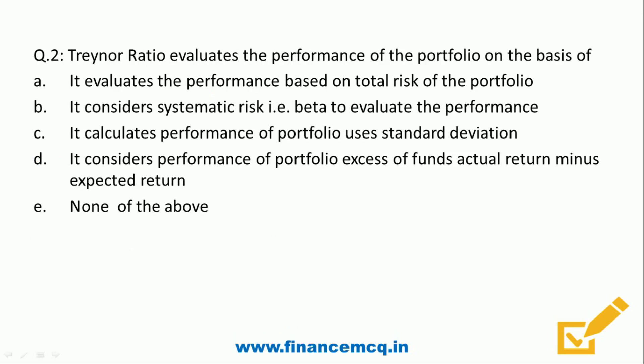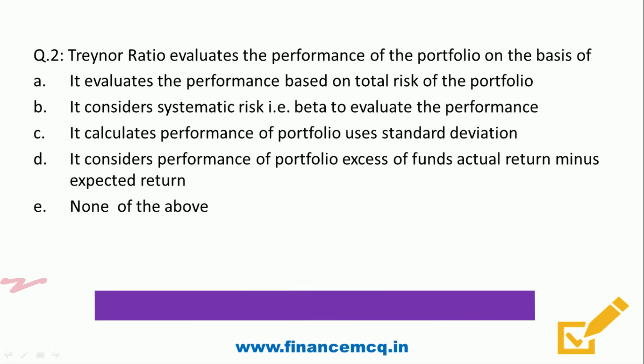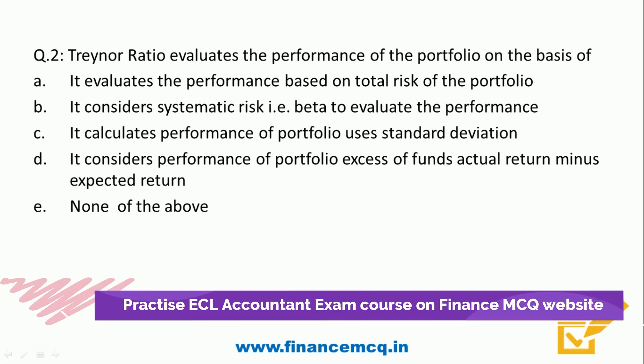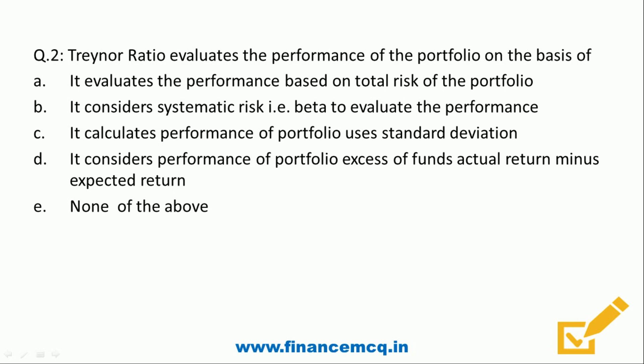Question two: Treynor ratio evaluates the performance of the portfolio on the basis of — option A: total risk, option B: systematic risk that is beta, option C: standard deviation, option D: excess of funds (actual returns minus expected returns), option E: none of the above.